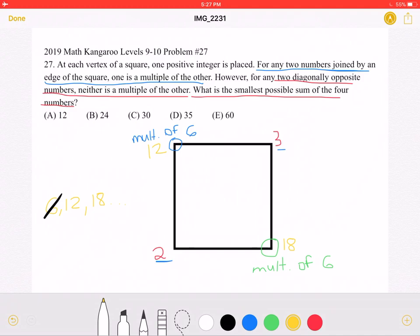And all the conditions are satisfied. The diagonally opposite numbers are not multiples of each other, and the numbers that share an edge are multiples of each other. Therefore, these are the four smallest numbers that we could have to satisfy those conditions.